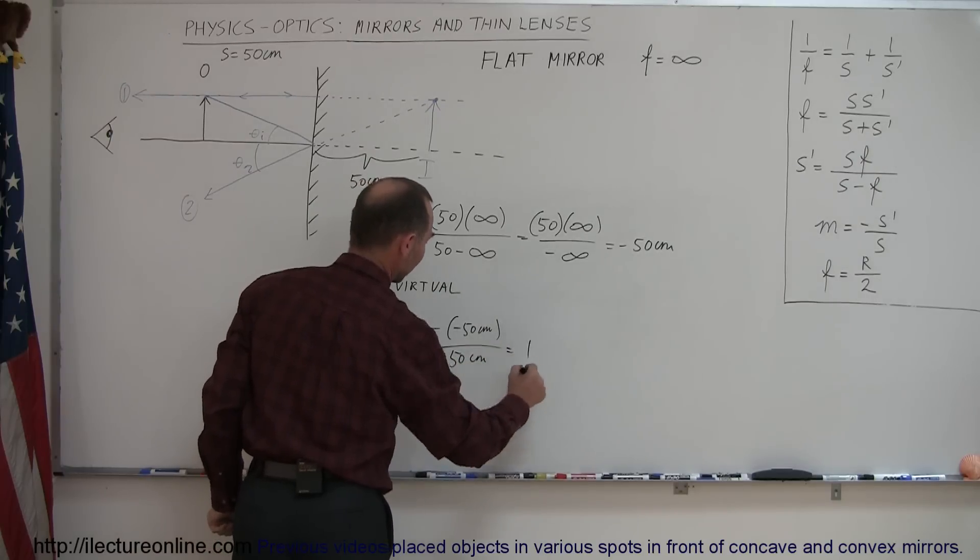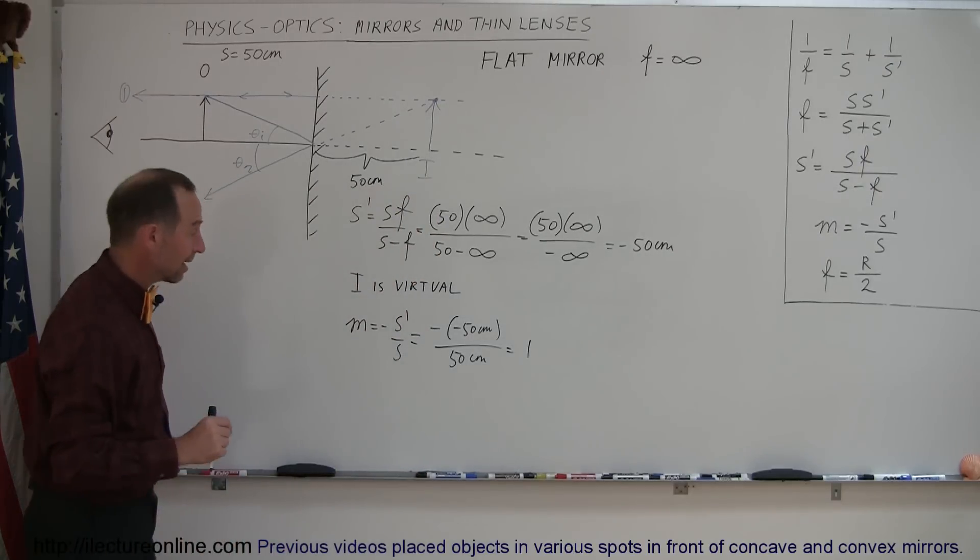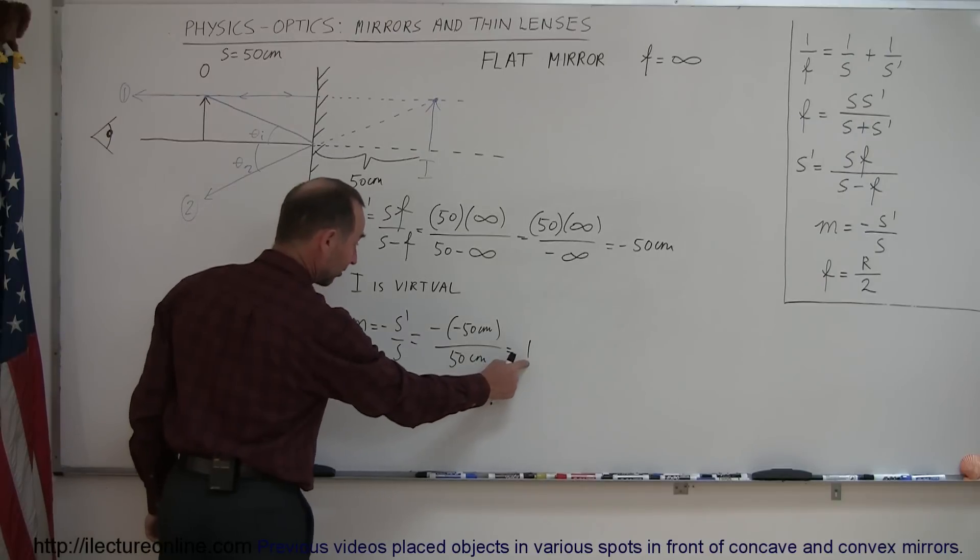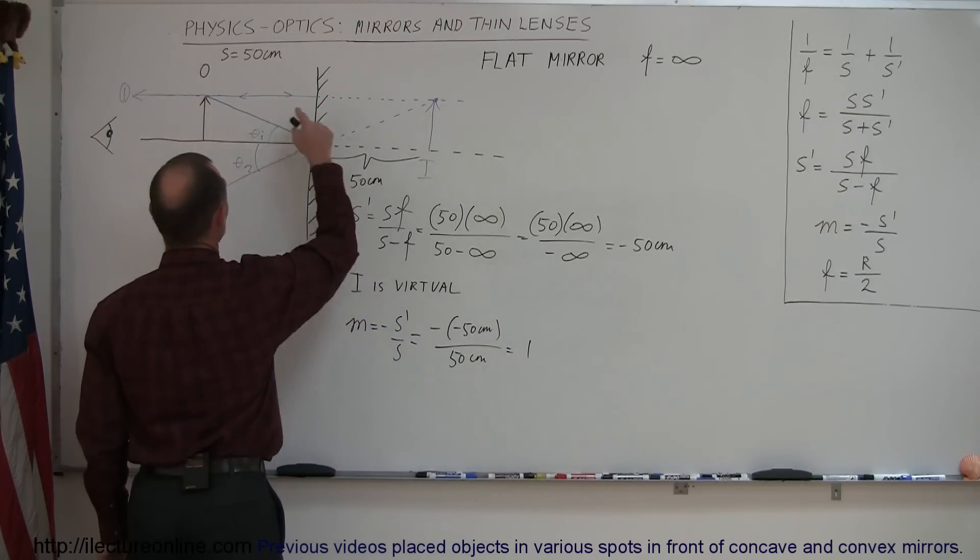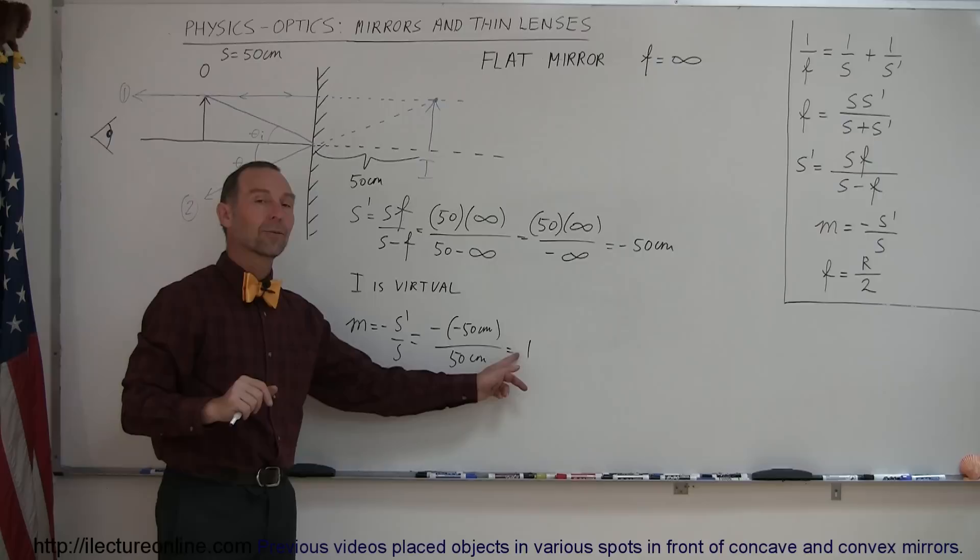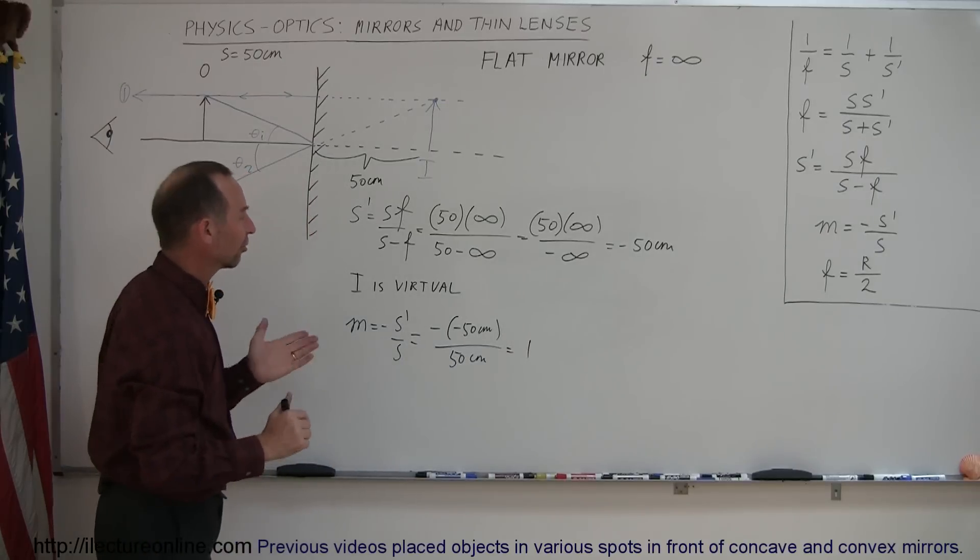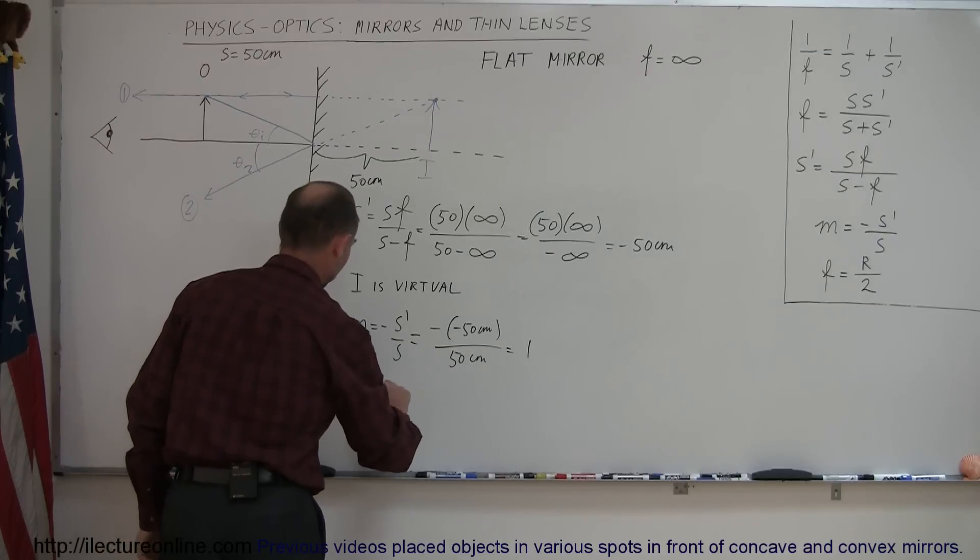So, the minuses cancel out, then gives us 1, which means that the size of the image is exactly the same as the size of the object. They're the same size. And not only that, the 1 is positive, which means that the image is upright, and so we write upright.